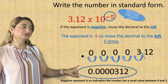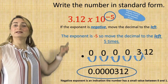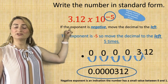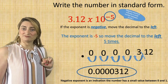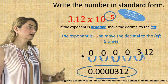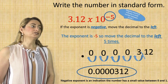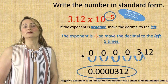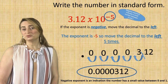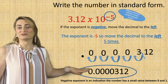Watch how the standard form and the scientific notation form represent the same value. A negative exponent is an indication the number has a small value between 0 and 1, and here's a proof of that.